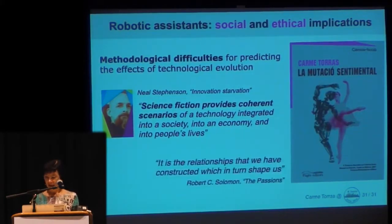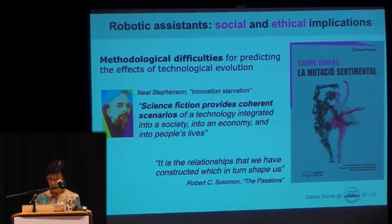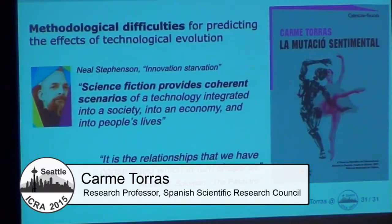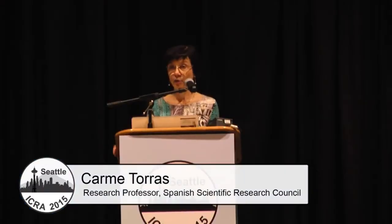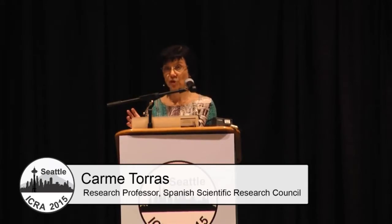I took the challenge of imagining our robot assistants integrated into people's lives, with its good and bad consequences. So I wrote a science fiction novel called The Sentimental Mutation, which has appeared in Catalan and Spanish, and I would very much like to see it in English. Its leitmotif is a quotation from the philosopher Robert Solomon, who said: 'It is the relationships that we have constructed which, in turn, shape us.' He meant our parents, our teachers, our friends — human relationships. But if we are to live with robot companions, robot butlers, robot nannies, this can also be applied to robots, since they are going to shape the way we and our future generations are going to be. So we better choose what type of robots we like to be modeled by. Thank you very much.